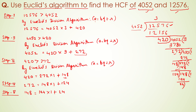We are still getting a remainder. We must continue until we get remainder 0. So remainder 24 becomes the divisor and 124 is the dividend. Dividing 5 times gives 120, so the remainder is 4. Stage 6: 124 equals 24 into 5 plus 4.